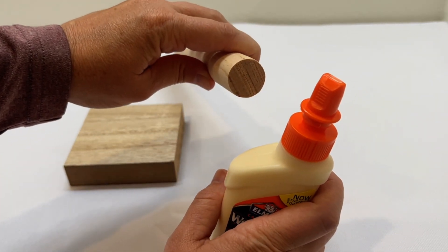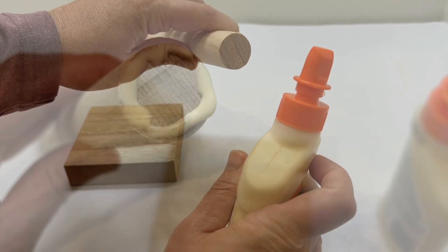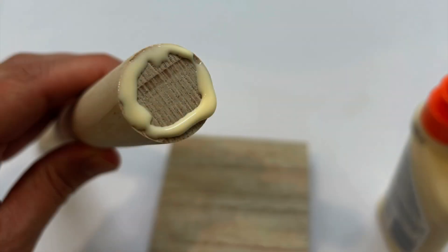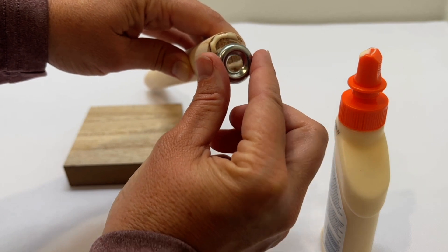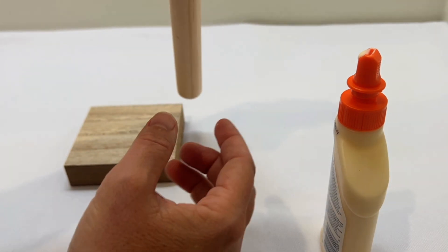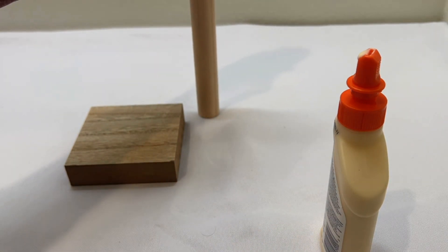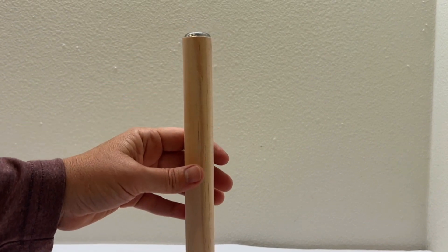Now, on the end of one of the dowel rods, make a circle around the edge with the wood glue. Once you have your circle of glue, stick that finishing washer into the glue and then set it upright to dry.